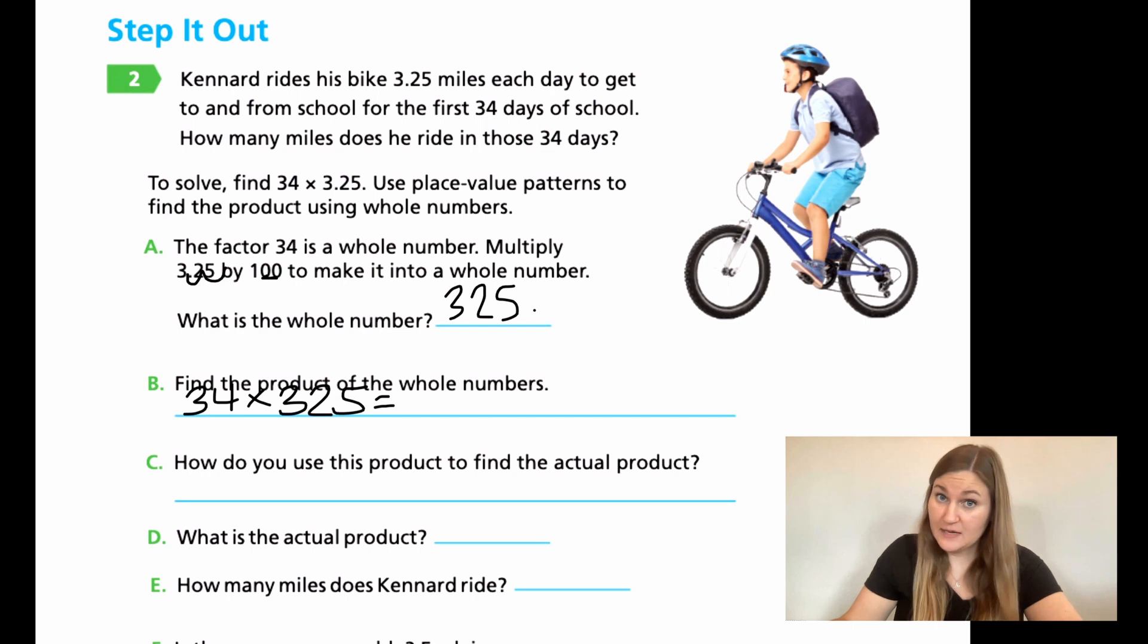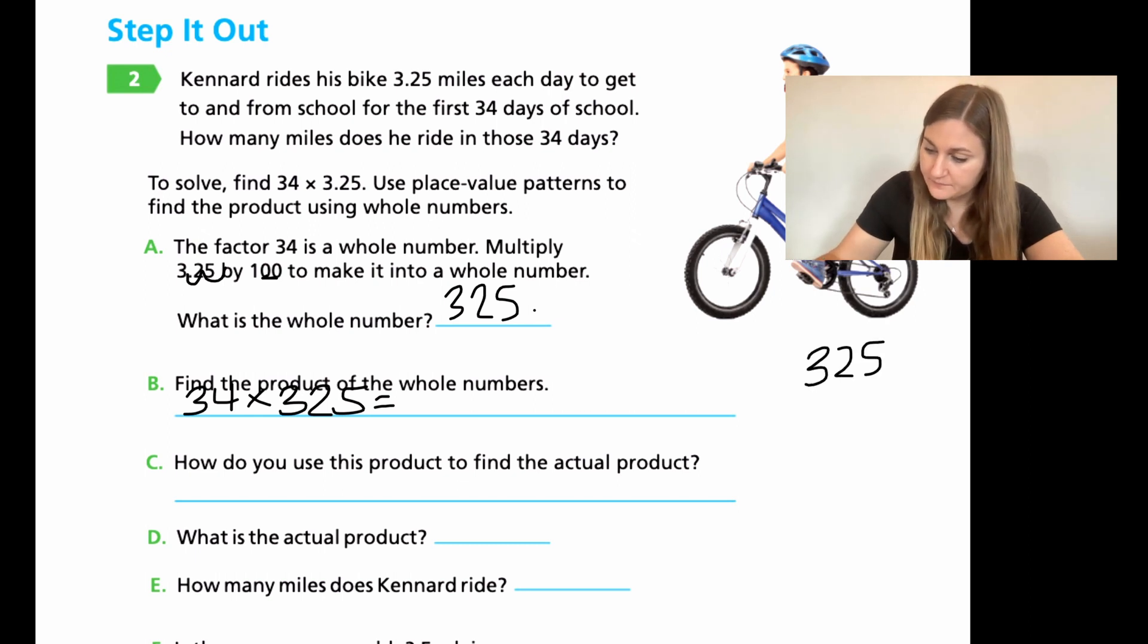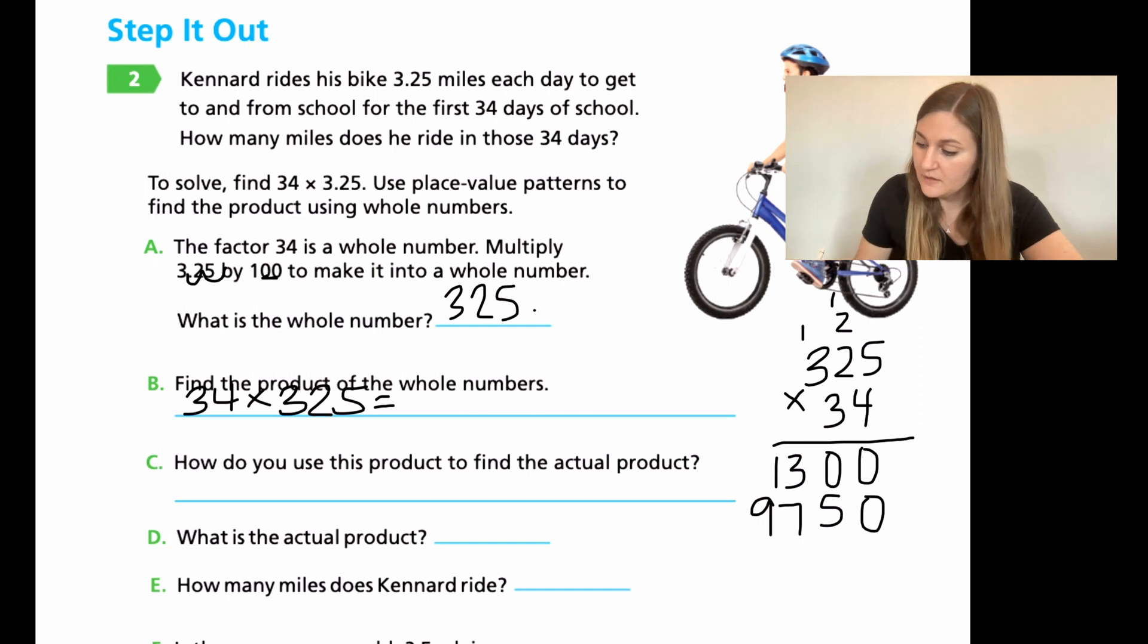OK, so for B, it says find the product of the whole numbers. So what it's asking me to do is take my whole number 34 and multiply it by 325. Alright, I can't do that math in my head, so I'm going to have to just go over to the right hand side and multiply it out. So I have my 325 and I'm going to multiply it by the 34. Alright, multiplying by just the ones place, just the 4. I have 4 times 5 is 20, carry my 2. 4 times 2 is 8, plus 2 is 10, carry the 1. 4 times 3 is 12, plus 1 is 13. Now I'm going to do a placeholder 0 and I'm going to multiply it by my tens place, the 3. So 3 times 5 is 15, carry the 1. 3 times 2 is 6, plus 1 is 7. And 3 times 3 is 9. Alright, now I'm going to add them. So I have 0, 5, 10, carry the 1, 10, and 11. So my answer is going to be 11,050.